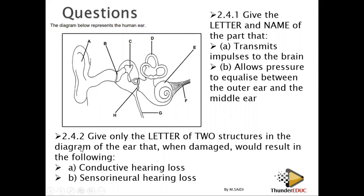Give only a letter for two structures in the diagram of the ear that, when damaged, would result in: number one, conductive hearing loss, and number two, sensorineural hearing loss. Sensorineural loss is about the senses — it's about E and F. Conductive hearing loss involves structures that conduct vibration — those are B and C.